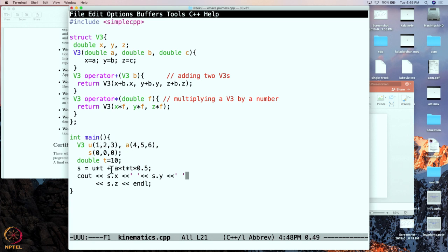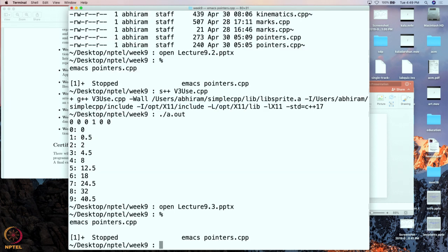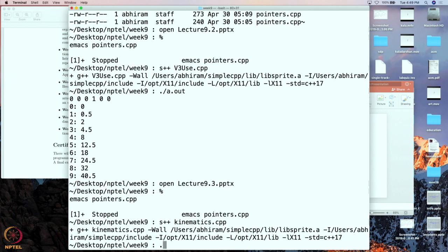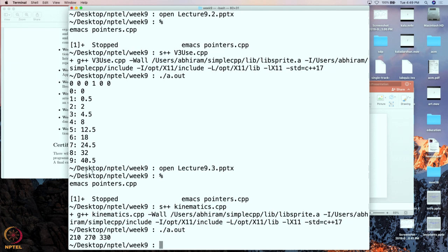So similarly you can do the other things but let us just check whether this will indeed produce s dot x to be 200, so 210. So let us execute this and run it, yes 210 it is the x coordinate.